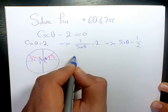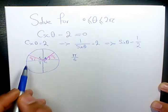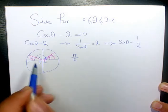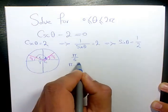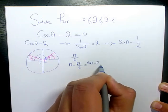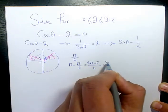And the other angle is π minus π over 6. π minus π over 6, which is going to be 6π minus π divided by 6, and it becomes 5π over 6.